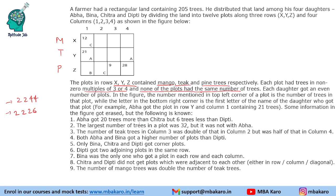Starting with the clues: Abha got 20 trees more than Chitra — we'll use this later. The largest number of trees in any plot was 32. The number of trees in column 3 was double that in column 2 but half that in column 4. So if column 2 has x trees, column 3 has 2x and column 4 has 4x. Both Abha and Bina got a higher number of plots than Deepti, which means the distribution must be 2-2-4-4.